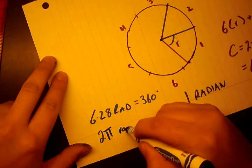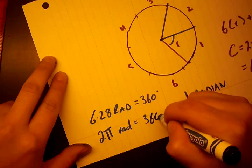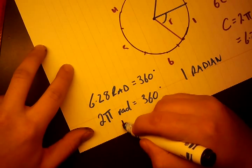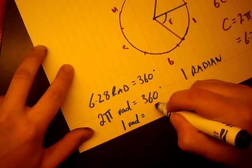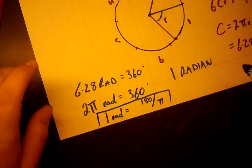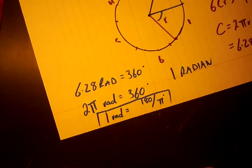So, 6.28 is actually 2π. So, 2π radians equals 360 degrees. So, if we just do a little division, we see that one radian equals 180 over π degrees. So, that is the most important equivalence that we're trying to see here. One radian equals 180 over π degrees.